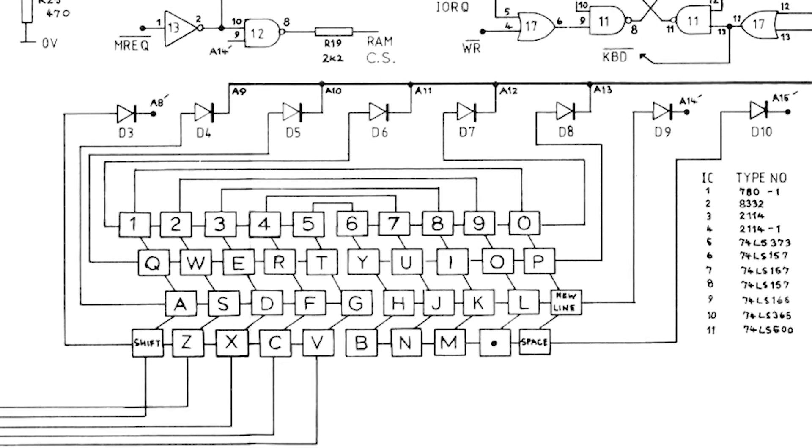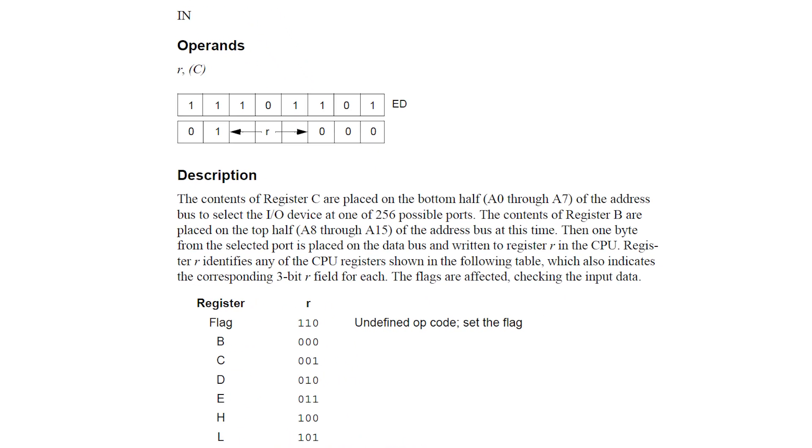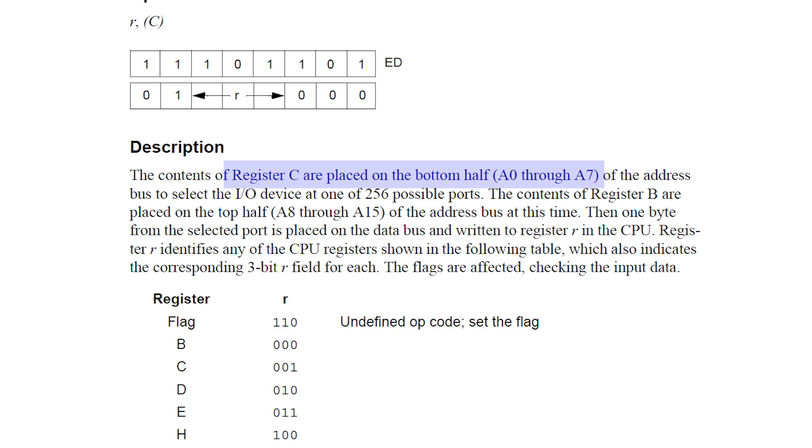Speaking of which, the next part of the schematic I want to look at is the keyboard circuit. This is controlled by the IN instruction, but it is a little more complex than I mentioned previously. While the IN instruction itself only refers to an 8-bit port number, the contents of the B register will simultaneously be output on the upper 8 address lines.